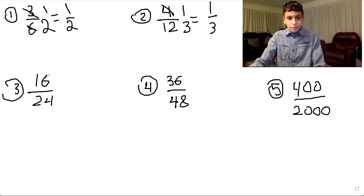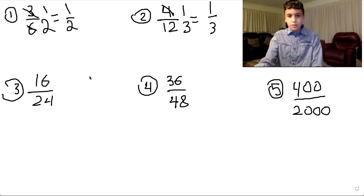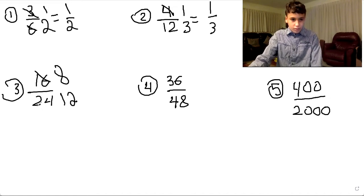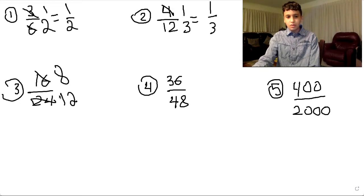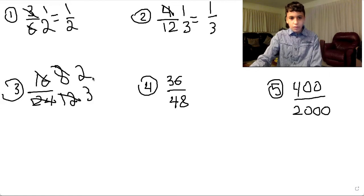For the third one, we have 16 over 24. Sometimes it's hard to find the largest number that can go into 16 and 24. Since they're both even numbers, we know they divide by two. So 16 divided by two will give you eight, and 24 divided by two will give you 12. Now it's easier to see the biggest number — four goes into eight two times, and four goes into 12 three times. Therefore, this is our answer.